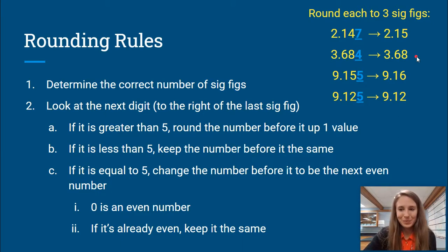Now, the difference comes when the next digit is a five. So we counted one, two, three sig figs. Our next digit is a five. When your next digit is a five, you are going to follow this rule right here that says you are going to change the number before it to be the next even number. So since five is not even, and our next number is a five, we need to round this five up to the next even number, which is a six.